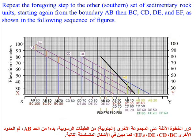Repeat the preceding steps for the other set of sedimentary rock units, starting from boundary AB, then BC, CD, DE, and EF, as shown in the following sequence of figures.